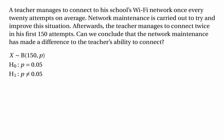To use the Poisson approximation we need to find the expected number of successes, which is n times p. Lambda will be 150 times 0.05, which equals 7.5. So the expected number of successes is 7.5. Instead of our original test statistic, we'll use a new test statistic which has the Poisson distribution with parameter 7.5.